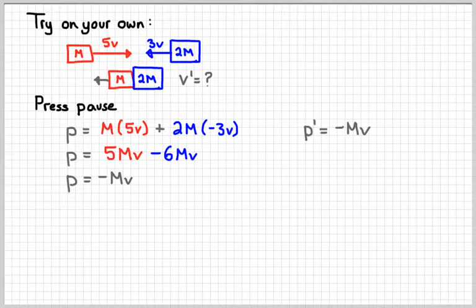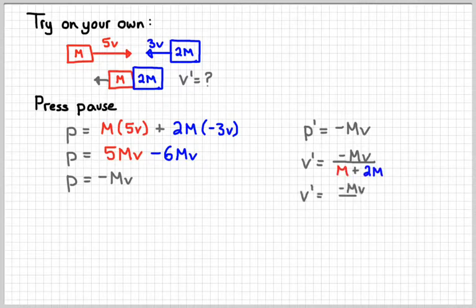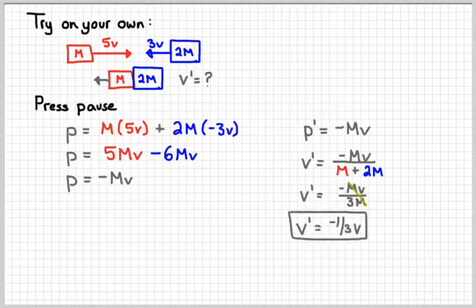Momentum is conserved in this situation. So I'm going to write that p prime equals negative mv. And so the velocity can be found by dividing that momentum by the mass of the two objects together. The mass of the two objects together will be m plus 2m, which is 3m.